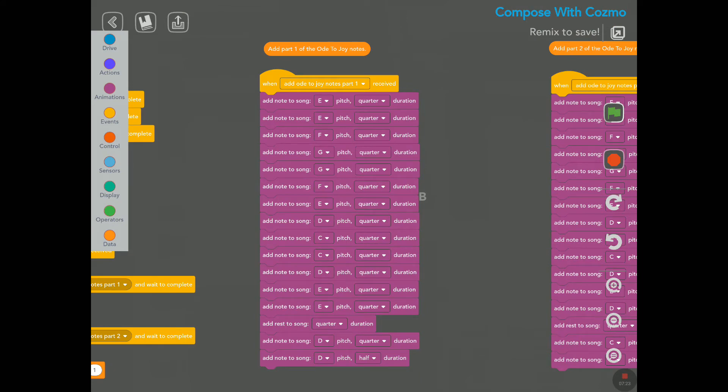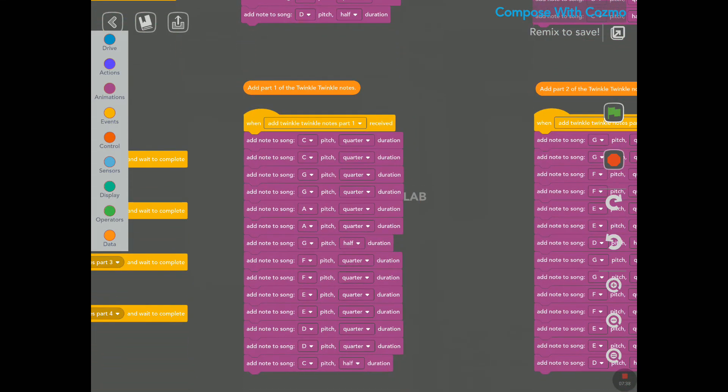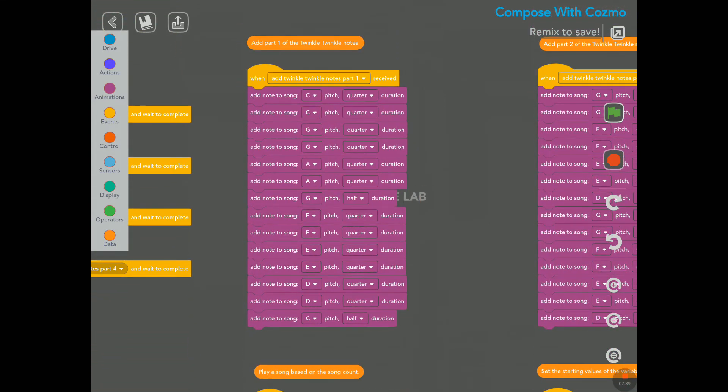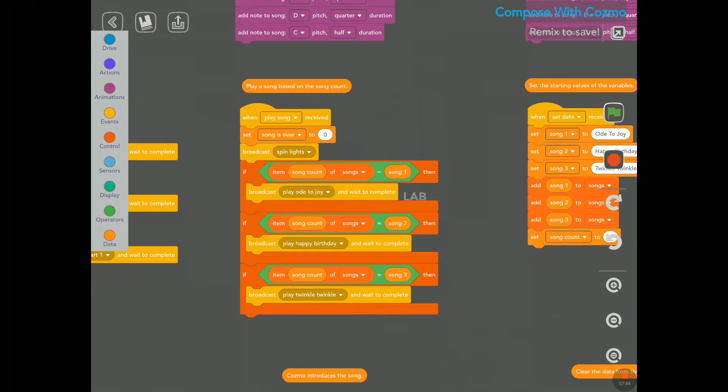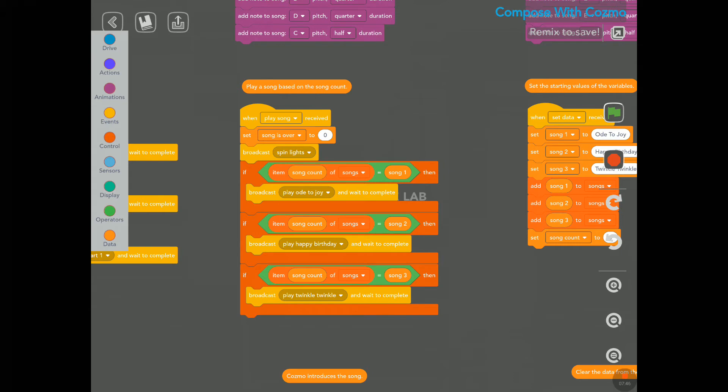Add part one of the Ode to Joy notes. As you can see here, you can play, add note to song. You can play a note, like the note, the standard CD, E, F, and so on. And quarter, we can set the pitch and quarter. I haven't played with this yet, but look at what you can do here. Twinkle, Twinkle, notes.